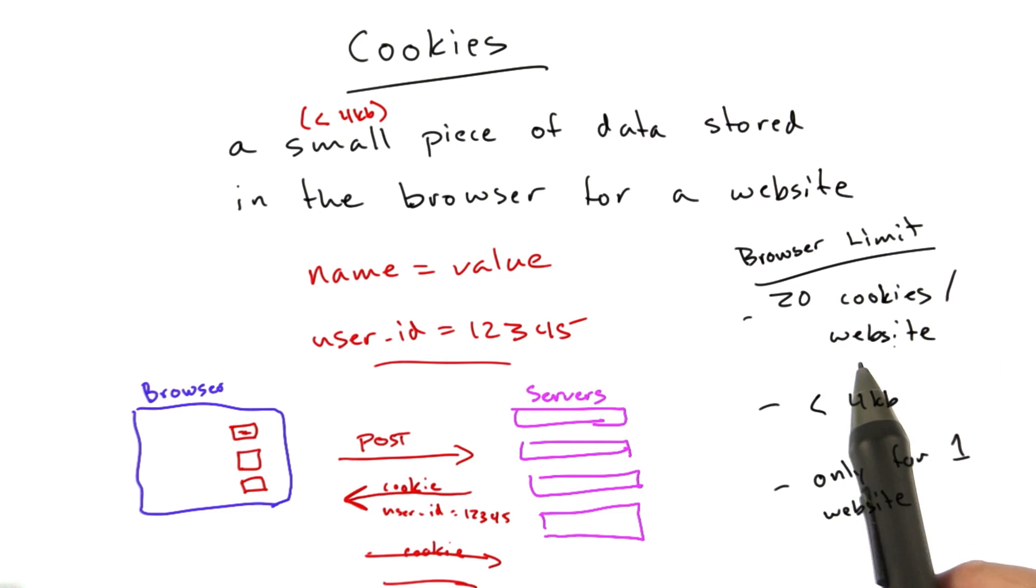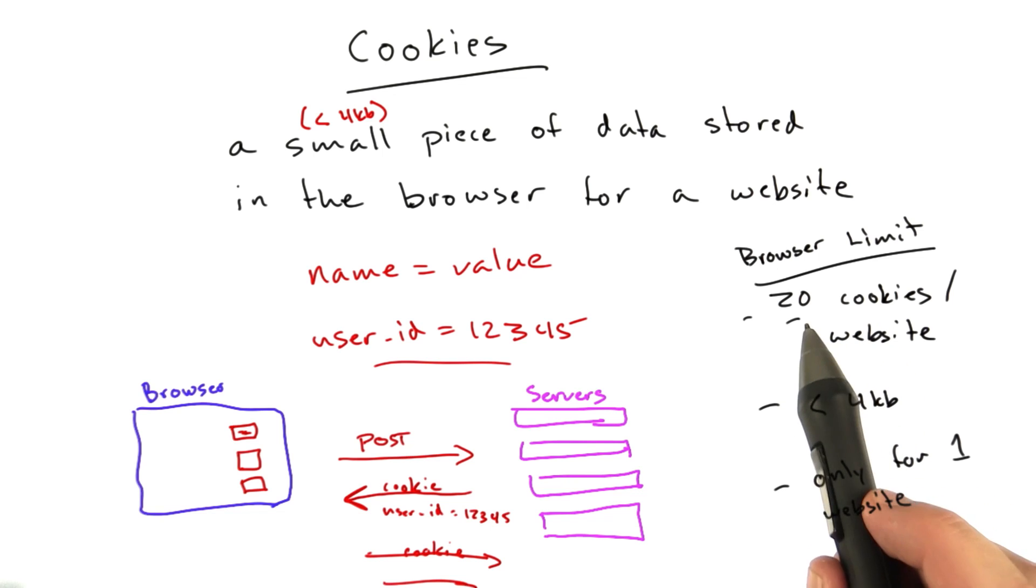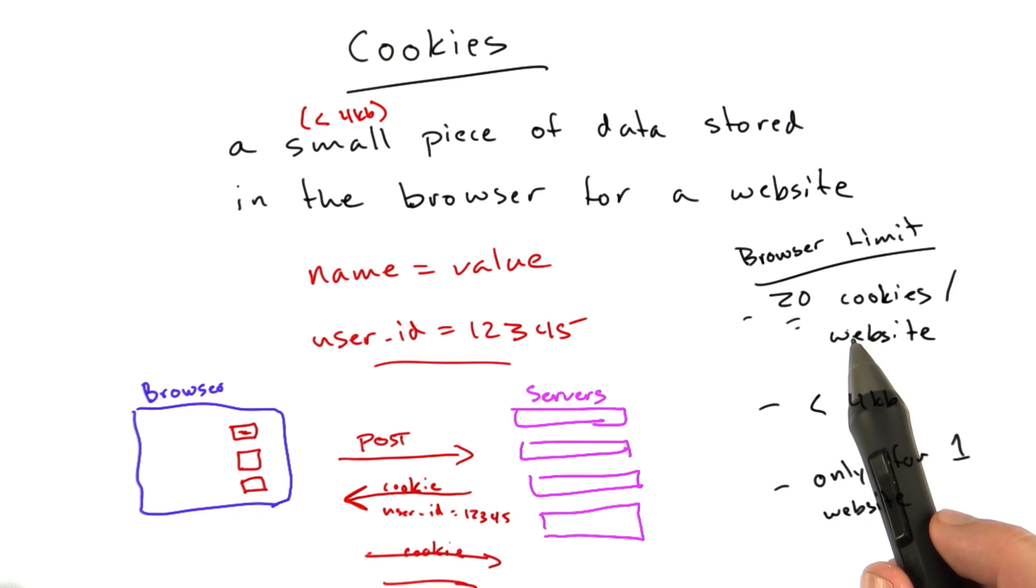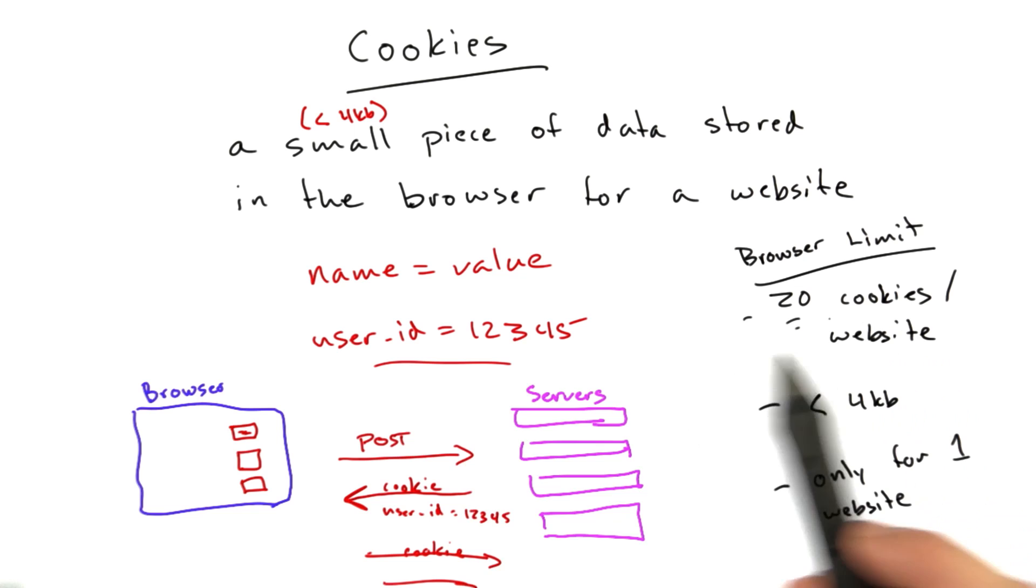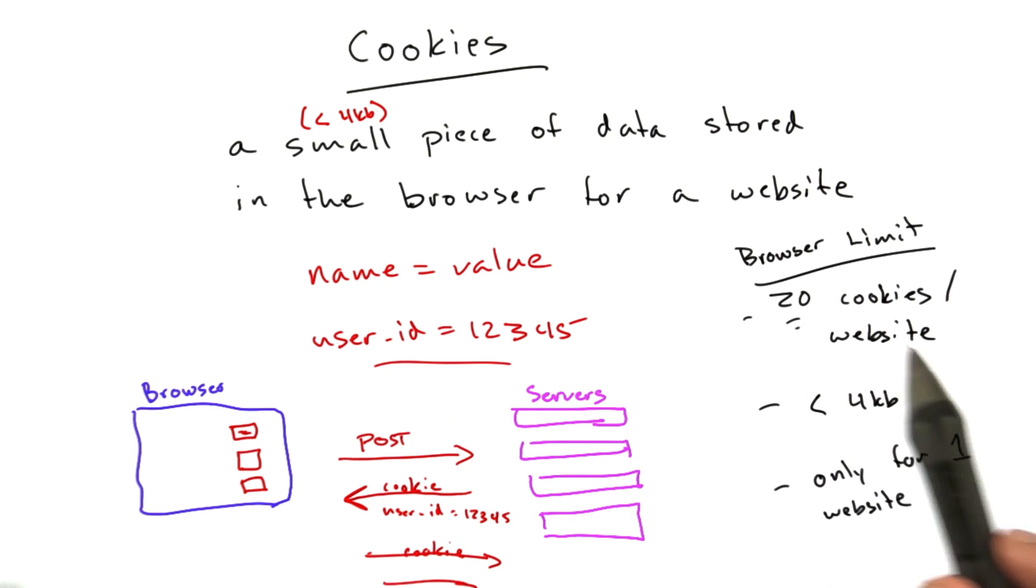So there's 20 cookies per website. That's an old Internet Explorer limitation. Honestly, I don't know what the limit is for modern browsers. But if you're storing more than 20 cookies on a particular domain, you could probably rethink things a little bit. Maybe store more data in a single cookie.